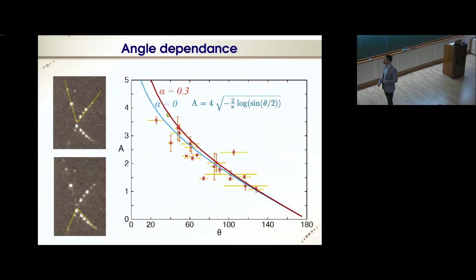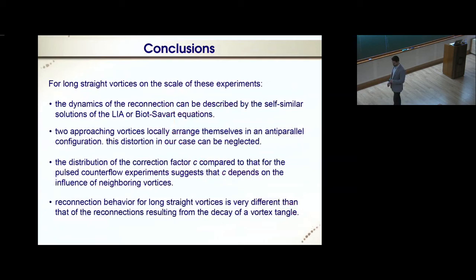From the overlap of the self-similar solution of the local induction approximation and the Biot-Savart equation, we know that two approaching vortices locally arrange themselves in an antiparallel configuration. But this distortion, in our case, can be neglected. The distribution of the correction factor C compared to that for the pulsed counterflow experiment suggests that C depends on the influence of the neighboring vortices. The reconnection behavior for long straight vortices is very different than that of the reconnection resulting from the decay of a vortex tangle. And with this, I thank you for your attention.